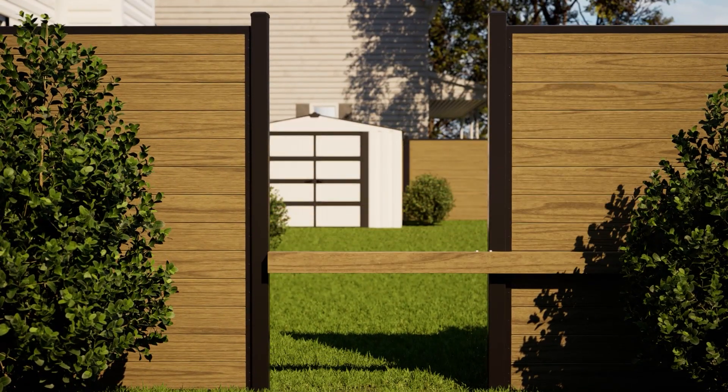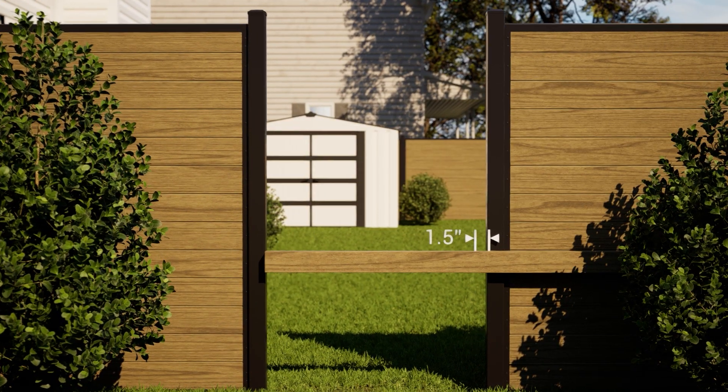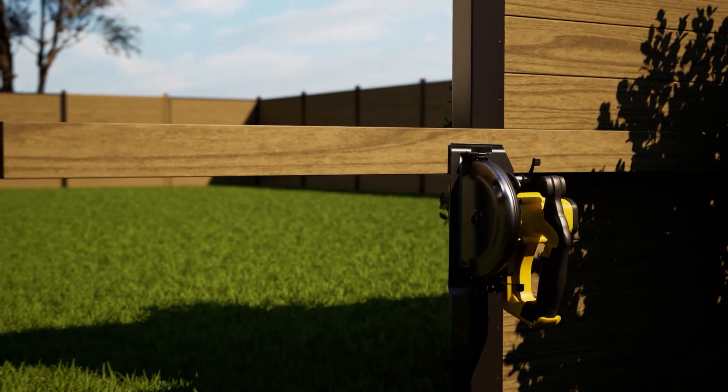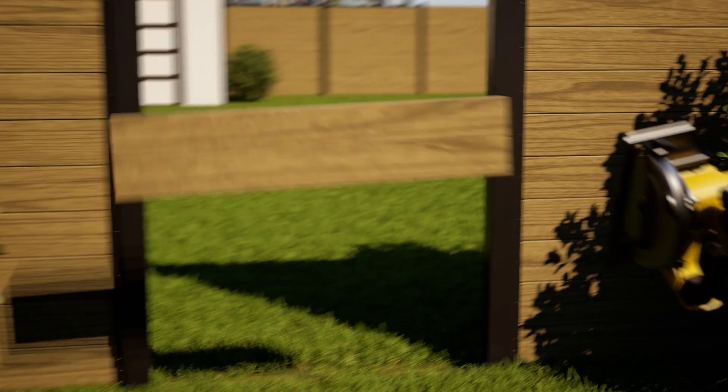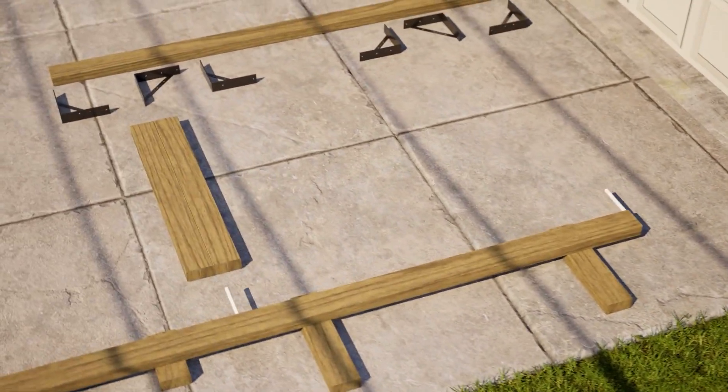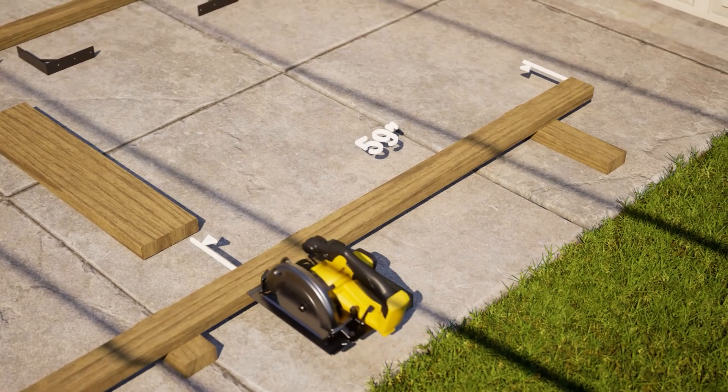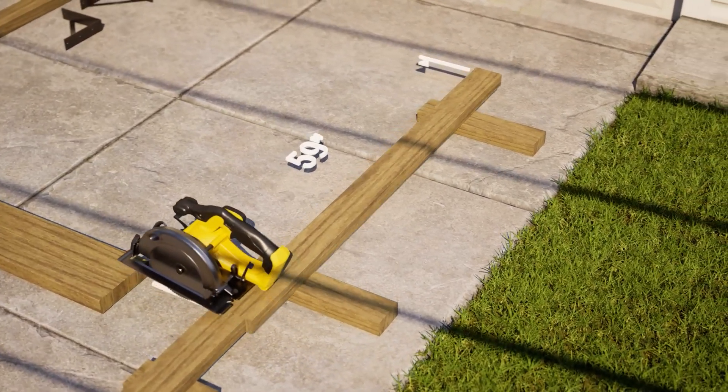Take a measurement between your gate posts and subtract 1 and a half inches. This is the length to cut the top and bottom 2 by 4 rails for your gate frame. For a horizontal gate, cut 2 more pieces of 2 by 4 lumber to 59 inches each. These are the side rails of your gate frame.